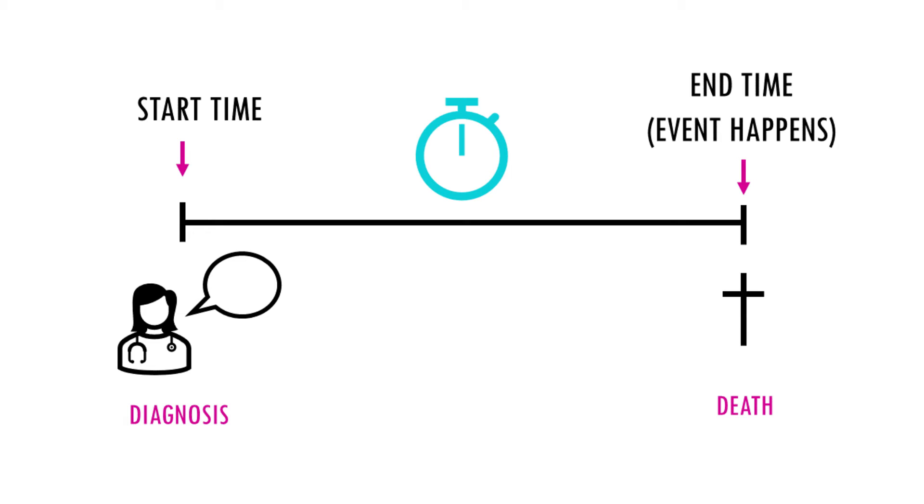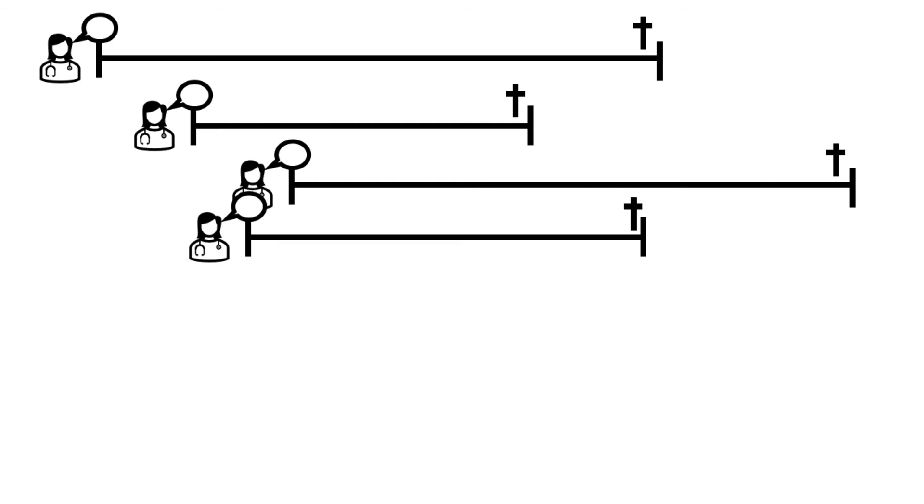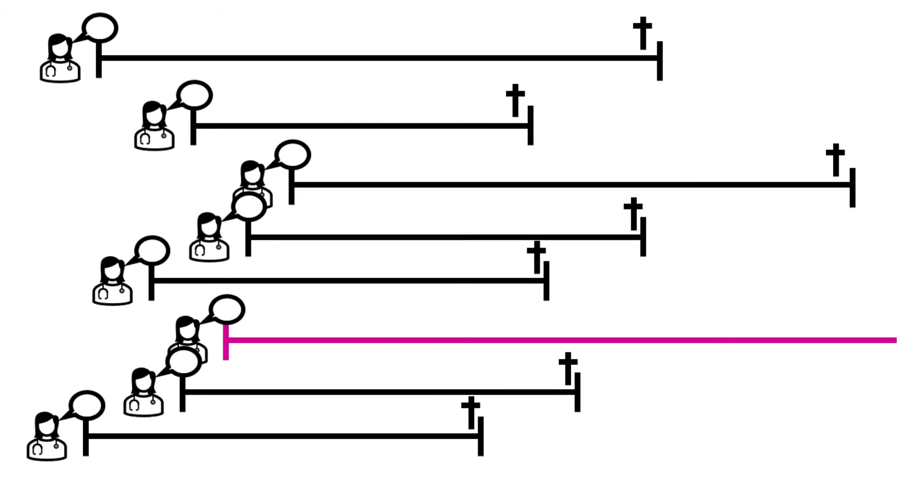So to understand censoring, we need to remember that a study cannot go on indefinitely. You cannot keep gathering data forever. At some point, you're going to want to stop collecting data and create that survival analysis curve. So every study has a clear start and end date.